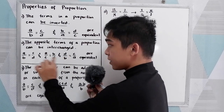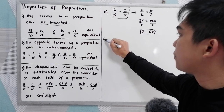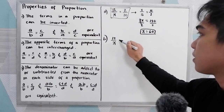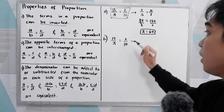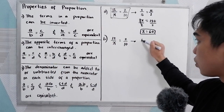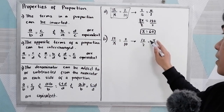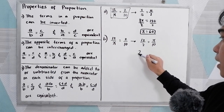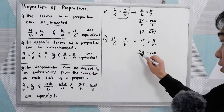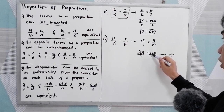Using the same given 12 over X equals 2 over 10, we can interchange to get 12 over 2 equals X over 10. Cross-multiplying: 2 times X equals 2X, which is equal to 12 times 10, that is 120. Dividing by 2, X equals 60 — the same answer.